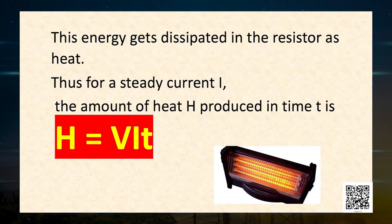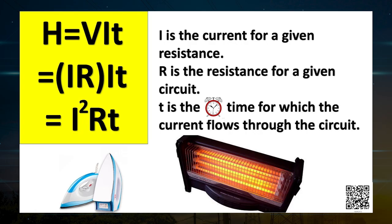What happens to the energy expended by the source? This energy gets dissipated in the resistor as heat. Thus, for a steady current I, the amount of heat H produced in time T is given by the formula H equals V I T. Applying Ohm's law, V equals IR, and substituting IR in place of V, we get H equals I squared R T.